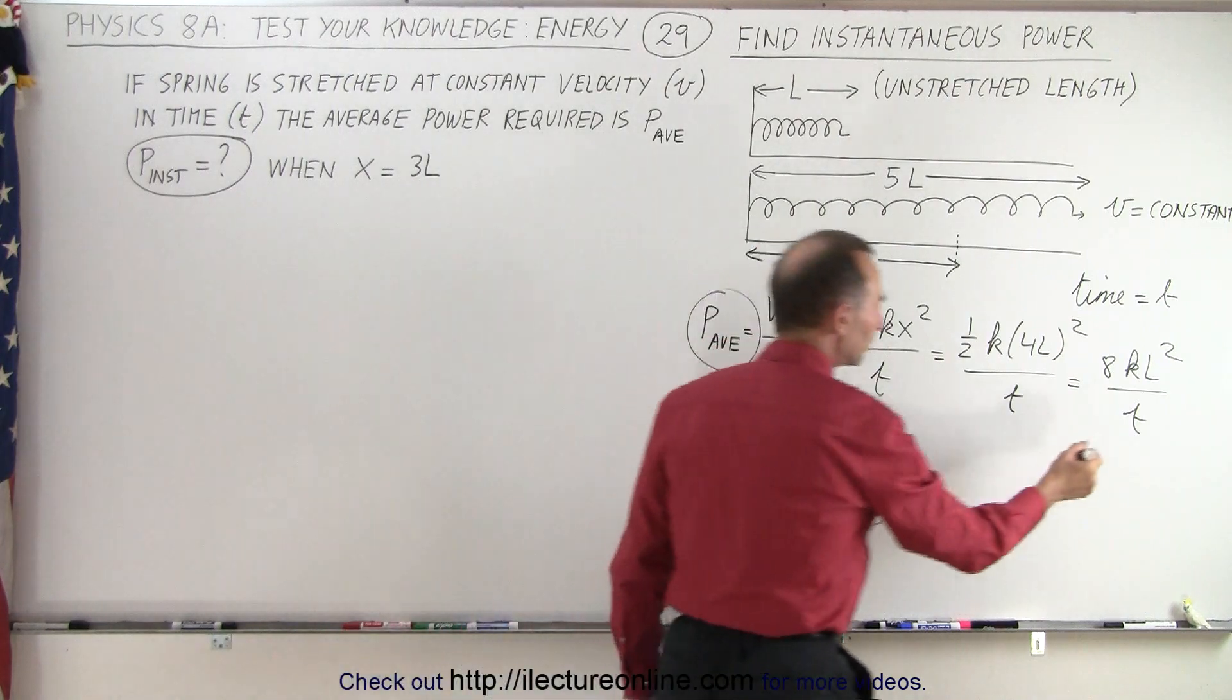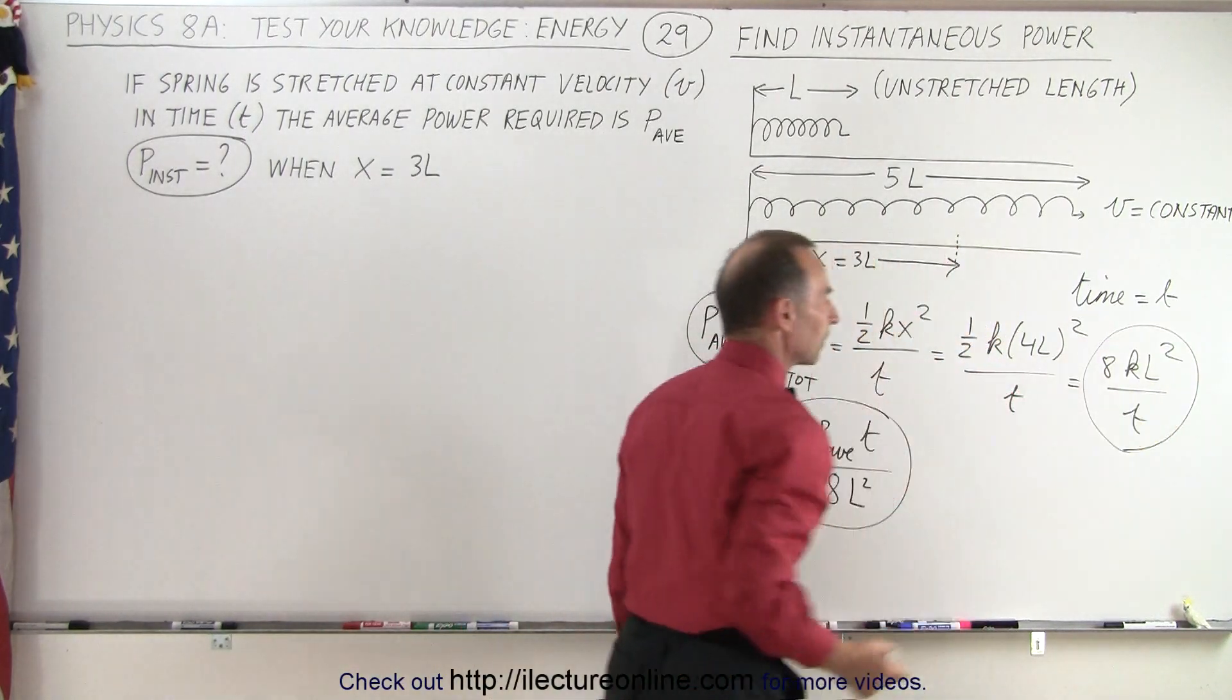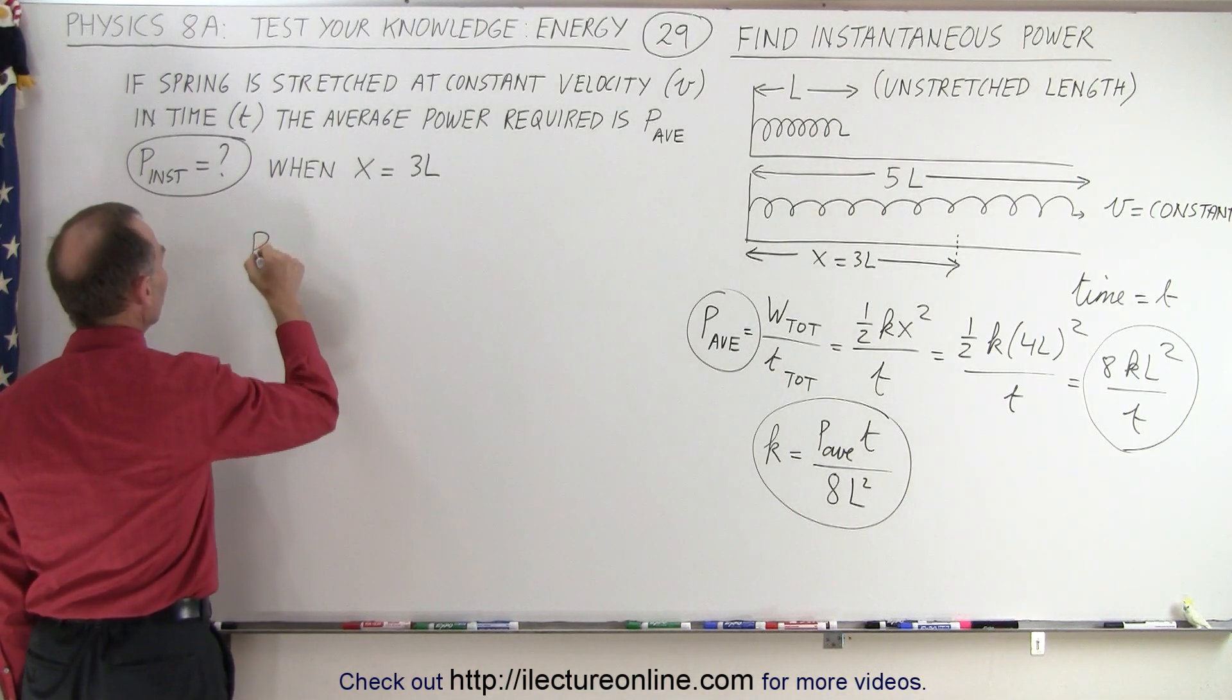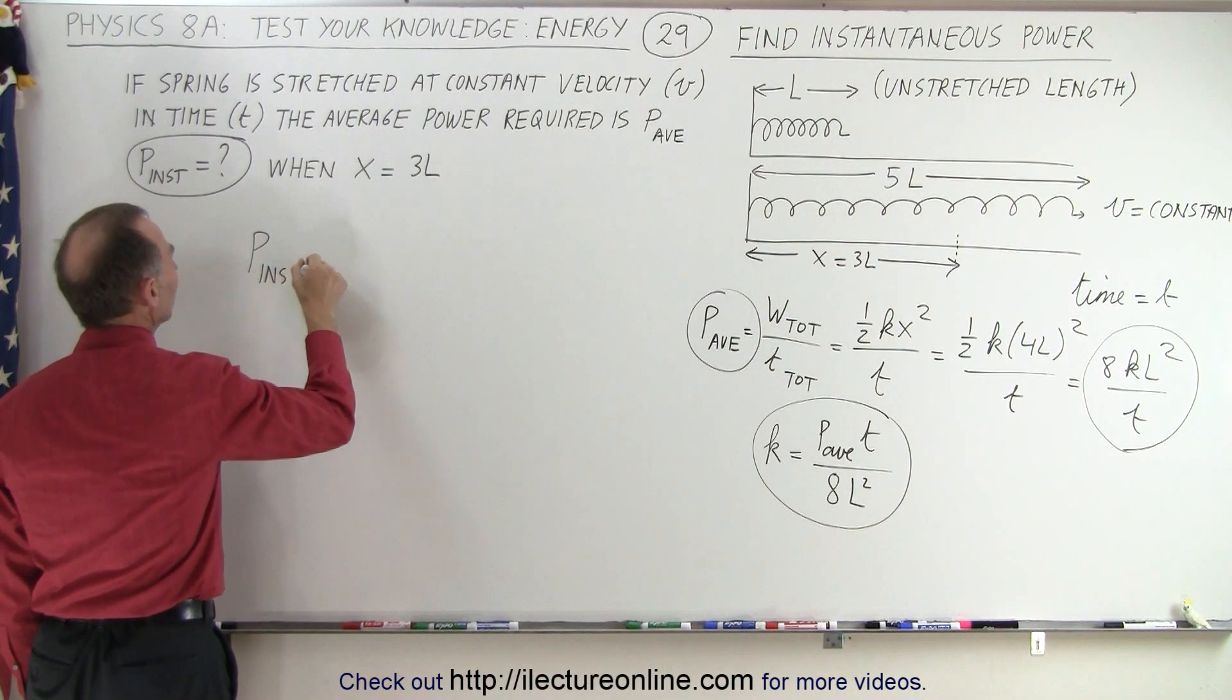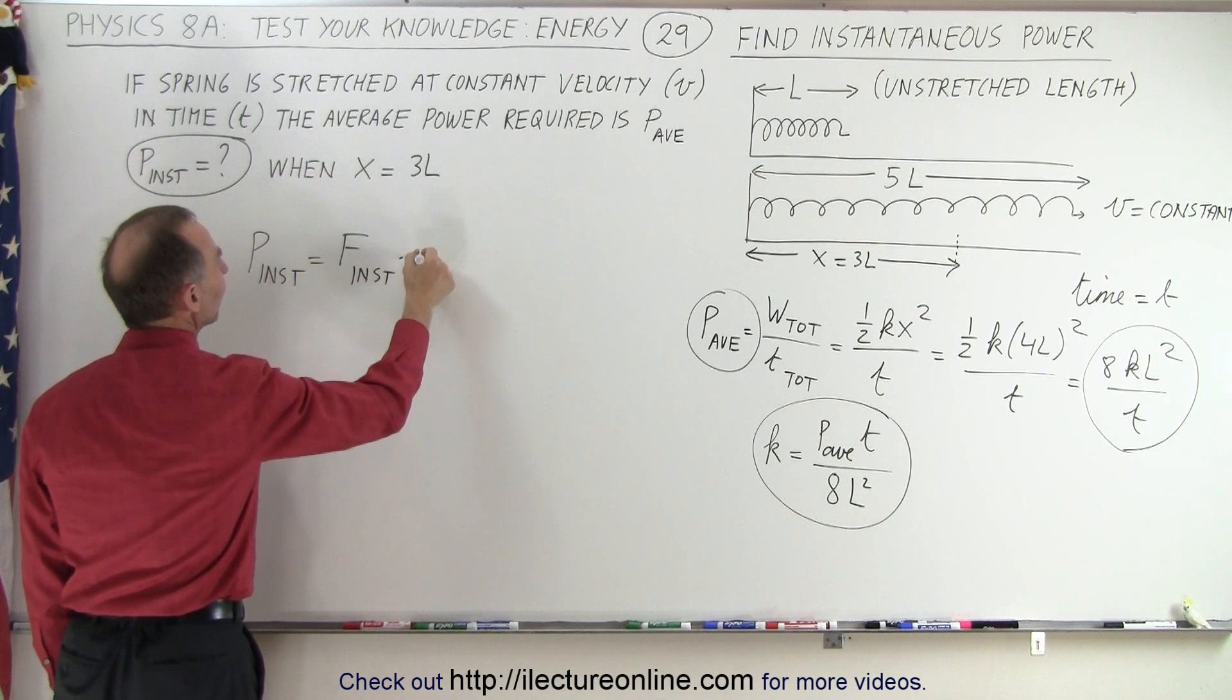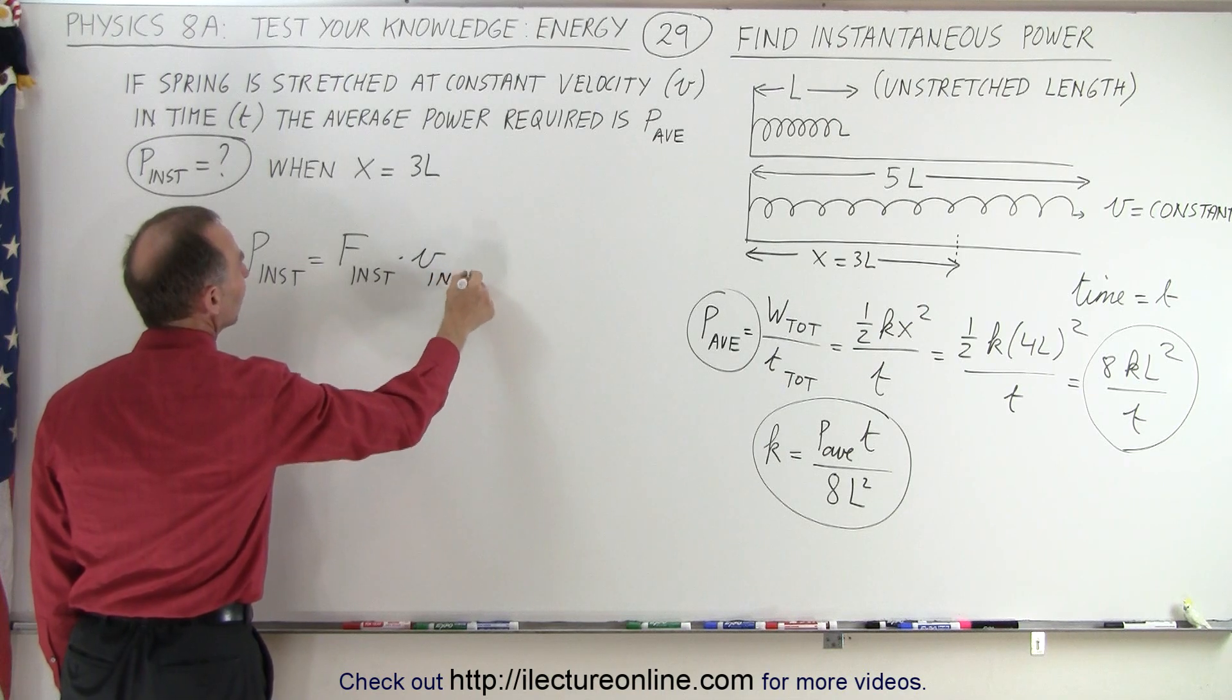And this is the average power. Now I'm going to find the instantaneous power. And the instantaneous power is going to be equal to the force instantaneous at that point times the velocity at that moment in time.